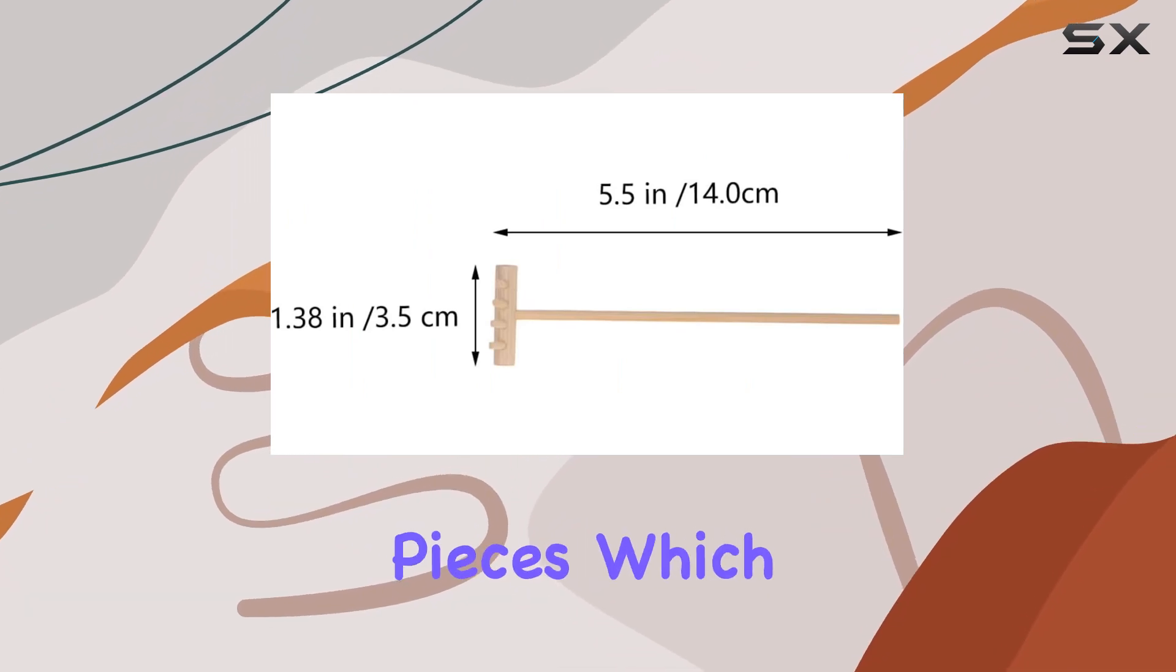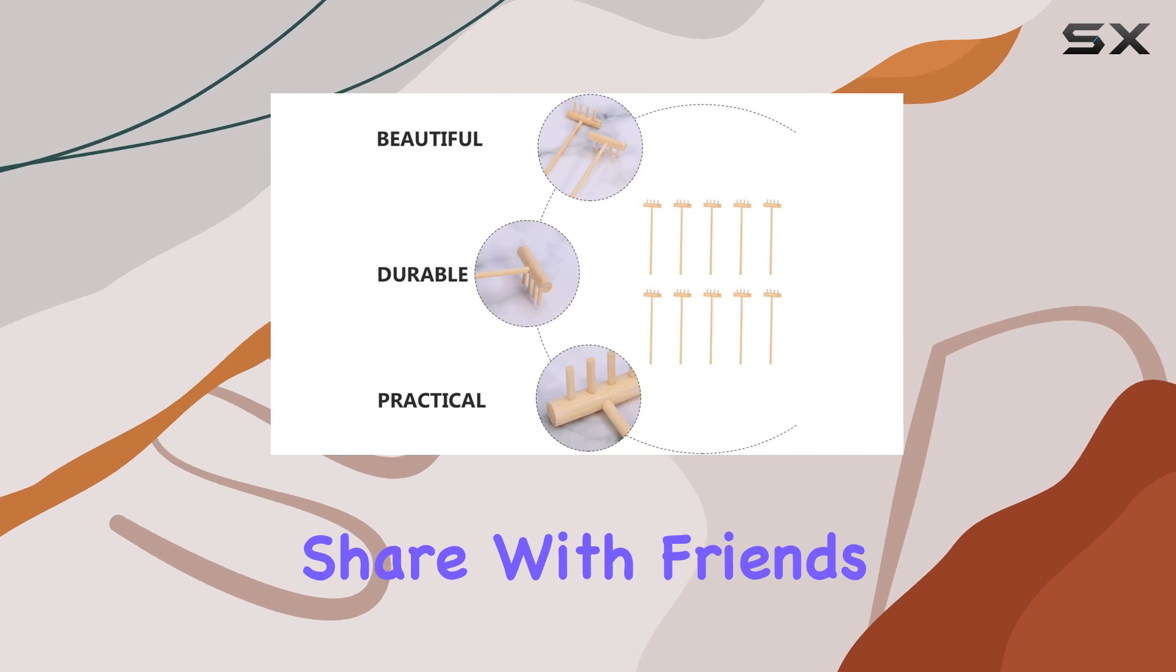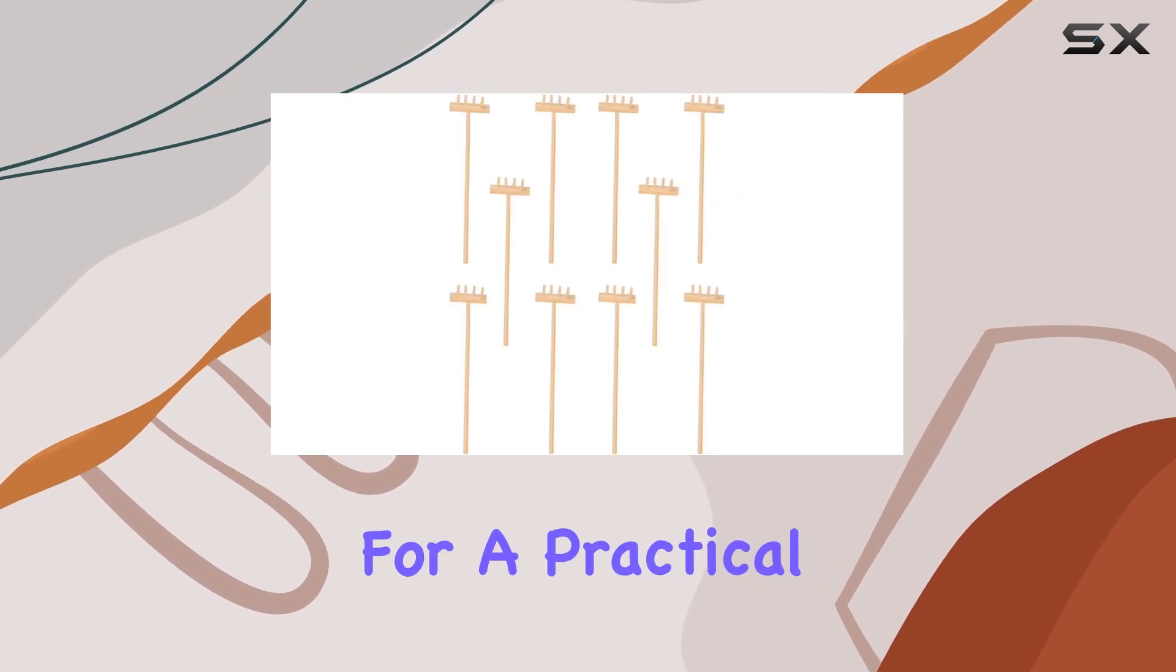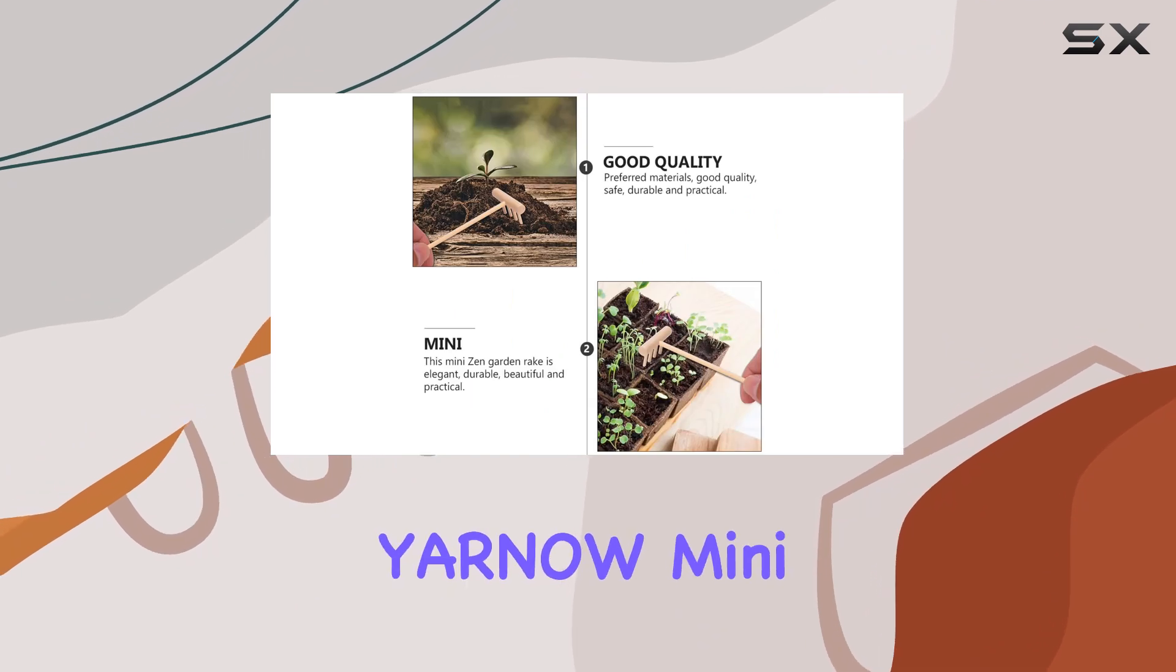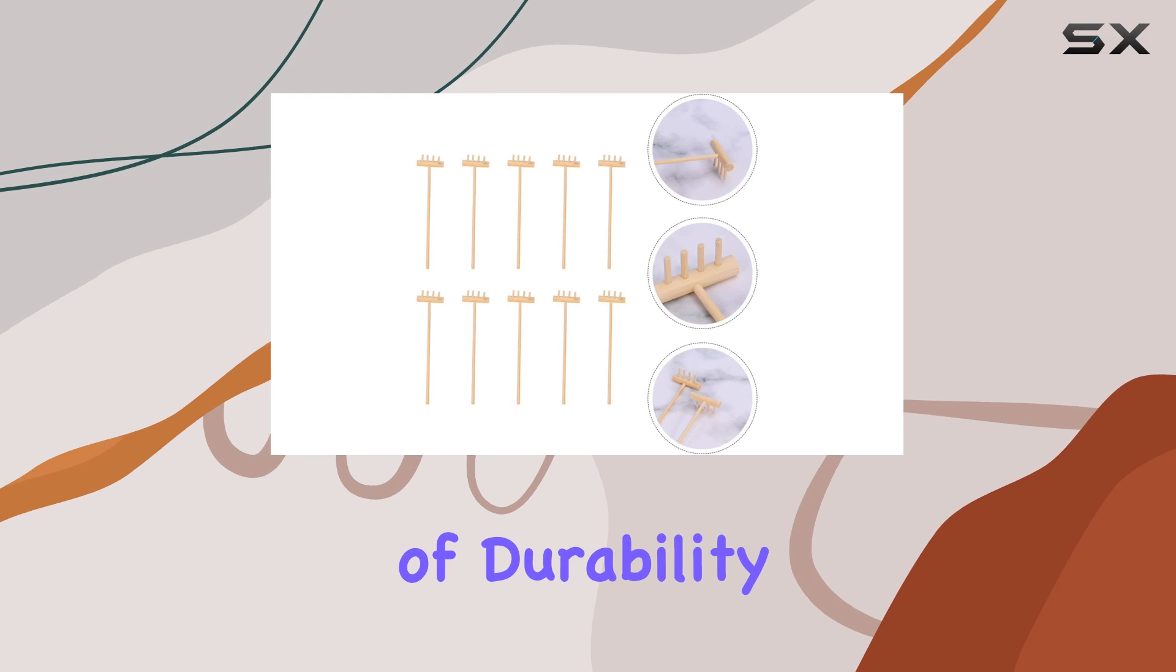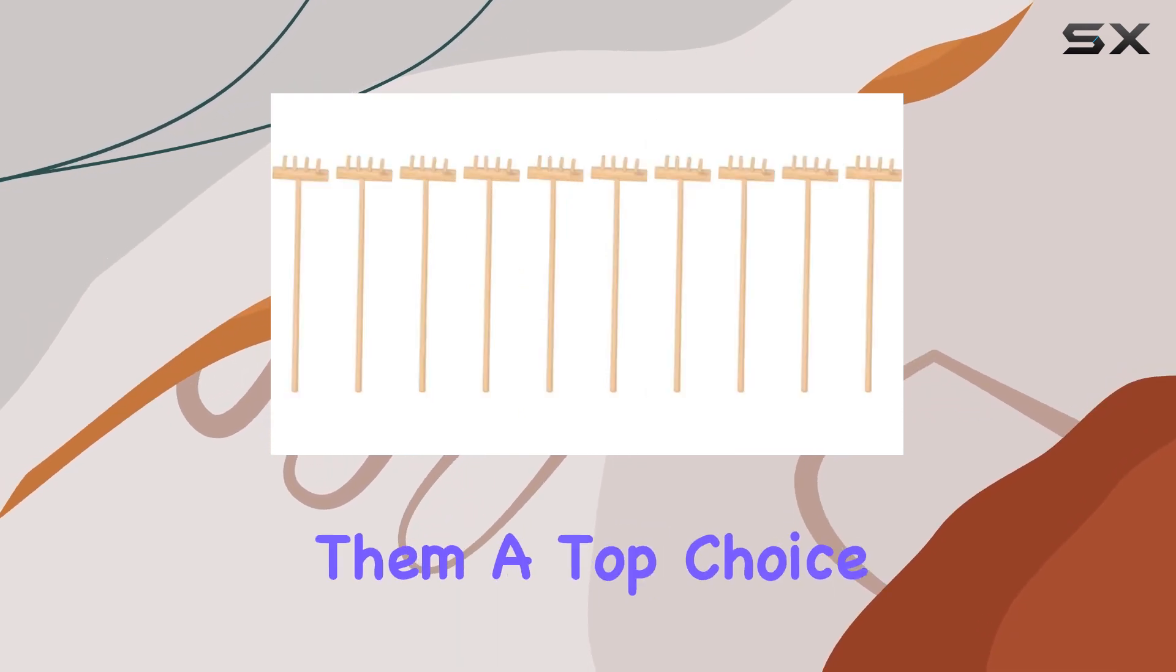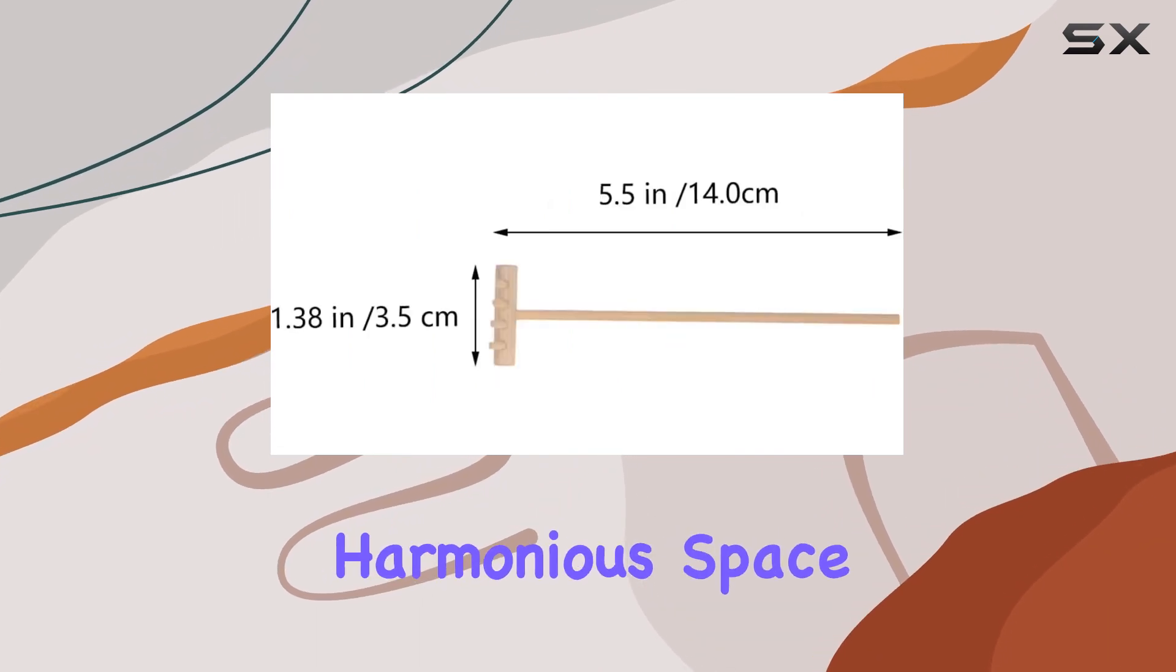The set includes 20 pieces, which means you'll always have a rake on hand for different tasks or to share with friends and family. If you're looking for a practical yet elegant tool to elevate your Zen garden experience, the Yarno Mini Zen Sand Rakes are definitely worth considering. Their blend of durability, design, and ease of use makes them a top choice for anyone passionate about creating a serene and harmonious space.